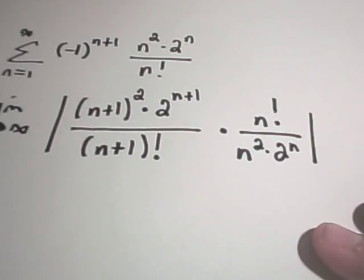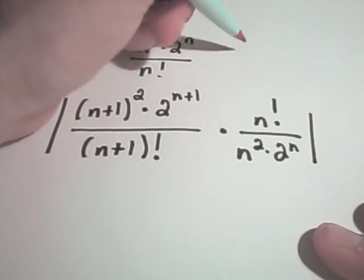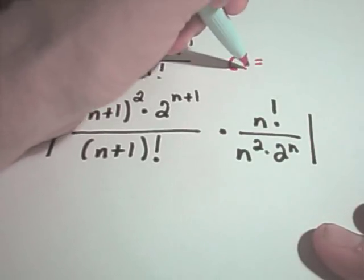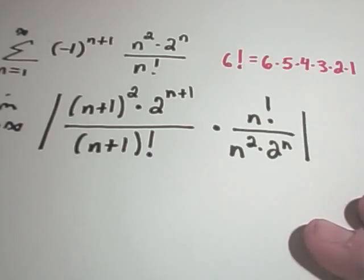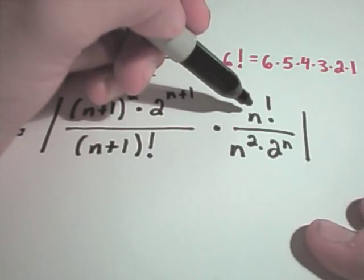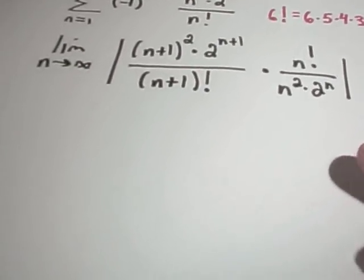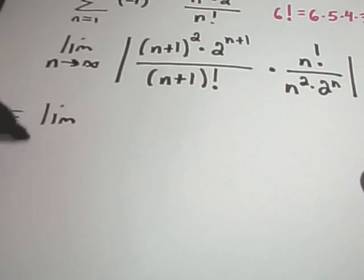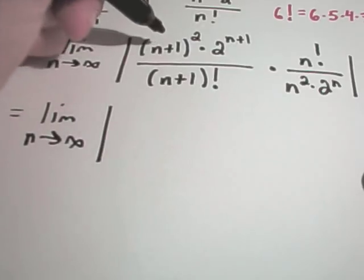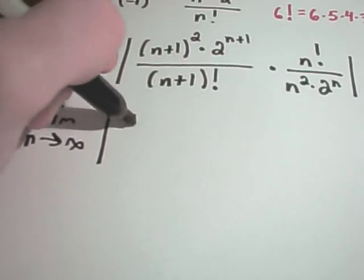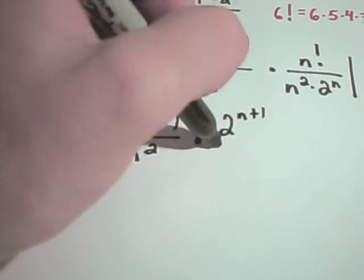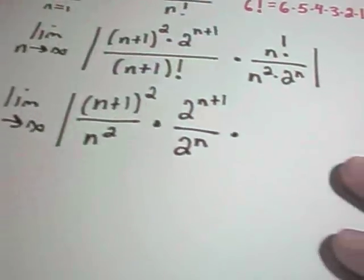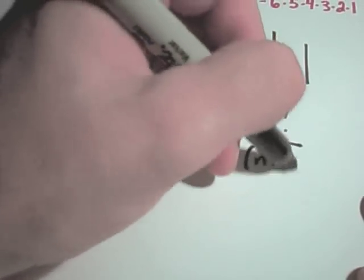Remember a factorial is just a fancy way, it's a shorthand for writing multiplication. So for example, 6 factorial is just the same as 6 times 5 times 4 times 3 times 2 times 1. So just in case you forgot what a factorial is out there. So n factorial is n times n minus 1 times n minus 2 times n minus 3, etc. So let's keep simplifying this limit down here a little bit. All right, so I'm going to kind of rearrange things. I've got n plus 1 squared over n squared. It looks like I have 2 to the n plus 1 over 2 to the n. And then I have this n factorial over n plus 1 factorial.